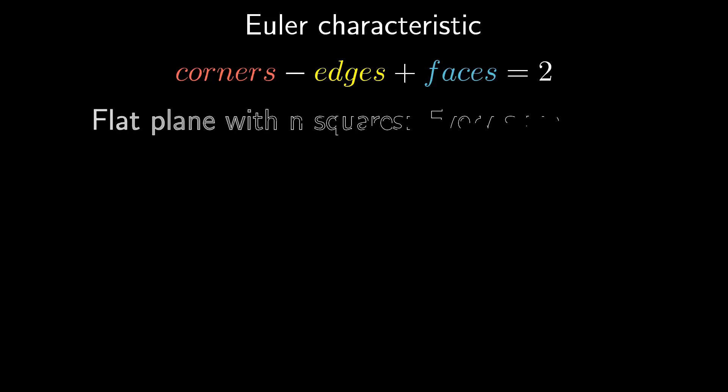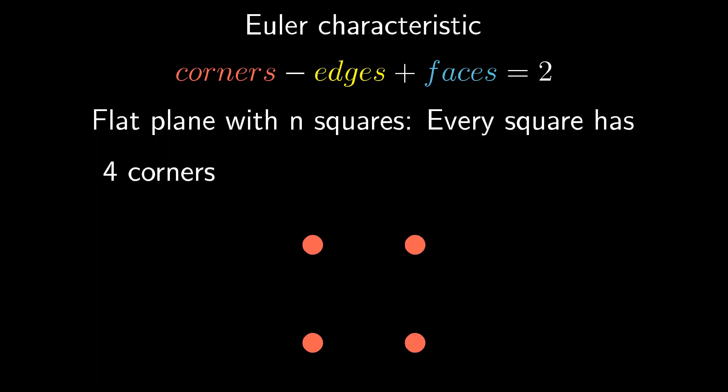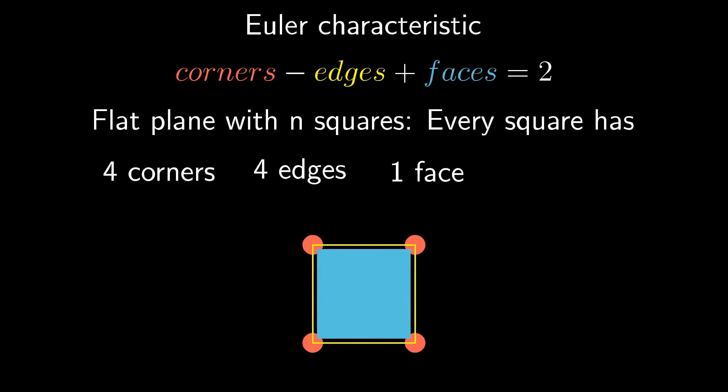On our flat plane, every square has four corners, four edges, one face, and four neighbors.